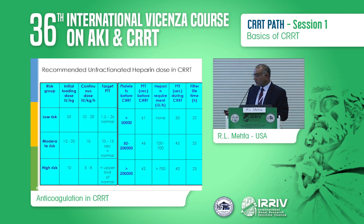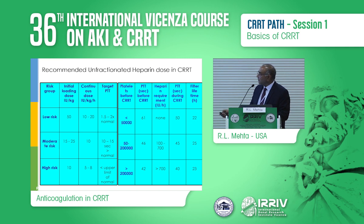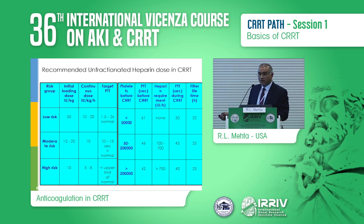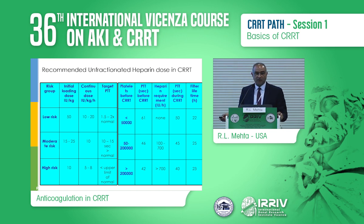For heparin dosing, you have to identify the risk. For a lower-risk patient with normal platelet counts and less bleeding tendency, you have the opportunity to give a higher loading dose and adjust accordingly. As you go to higher-risk patients, that becomes problematic and is also determined by platelet counts. As platelet counts drop, this filter lifetime doesn't change much, but your bleeding risk magnifies considerably as you go into the higher-risk population.